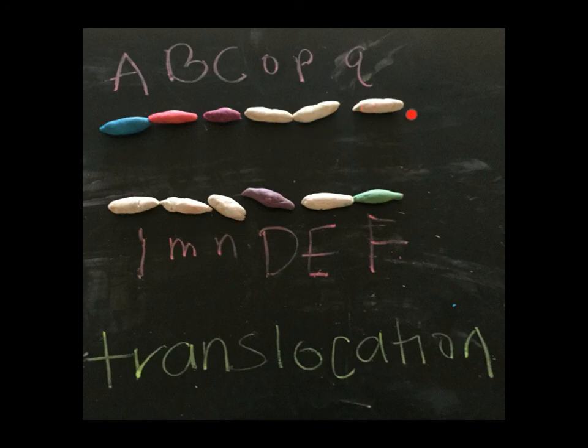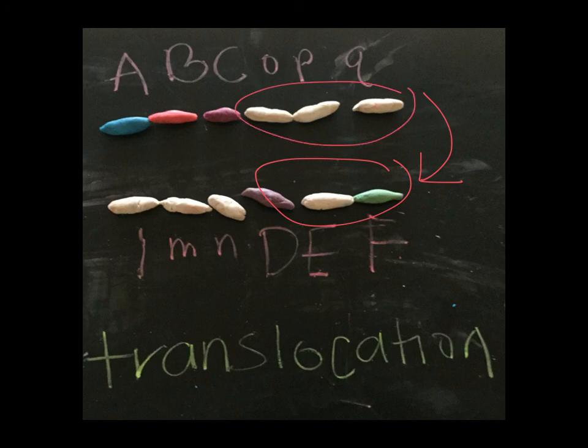And O, P, Q came up here. So, all that really happened was that D, E, F came down. O, P, Q went up. So, they just switched spots. They changed locations. A translocation. Please make this and take your picture.